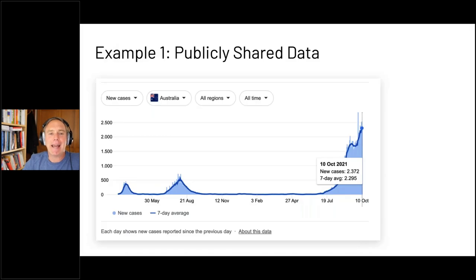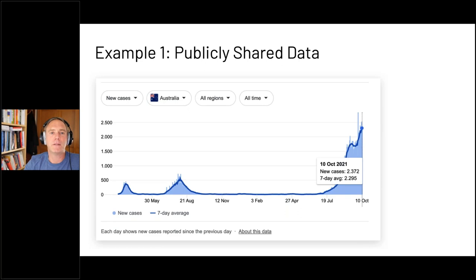I have three examples of sharing huge amounts of data. The first one — I assume you don't want to see this anymore because we've been looking at this kind of data for 18 months — but it's a good question: how would you share this data to a wider audience? Maybe to a geeky audience that wants the raw data, to plot it and work with it. That's the first example: publicly available health or scientific data.